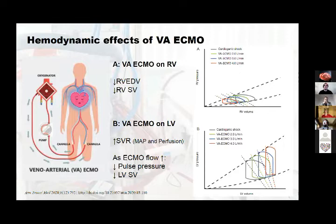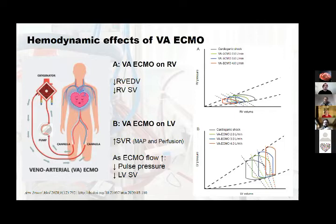When we place a patient with cardiogenic shock on venous-arterial ECMO, what happens to the heart? VA ECMO can serve as a bridge to recovery, a bridge to transplant, or a bridge to further mechanical support. As you can see in the slide, we have the pressure-volume loops for the right ventricle on top and the left ventricle below.